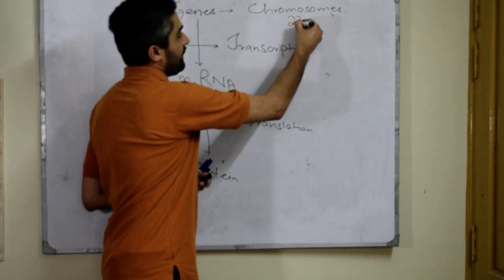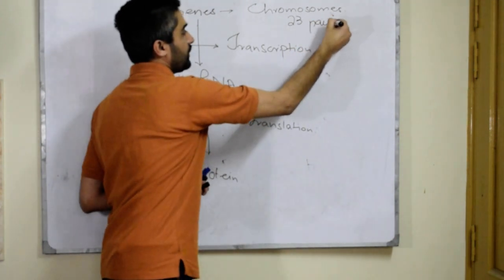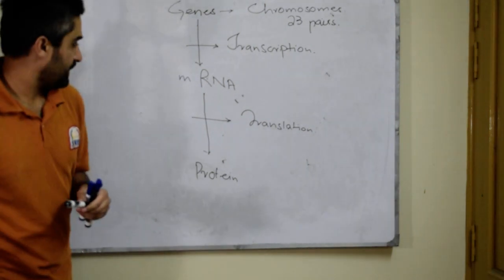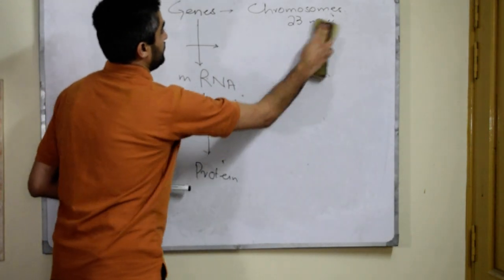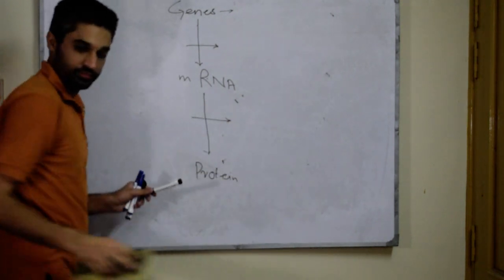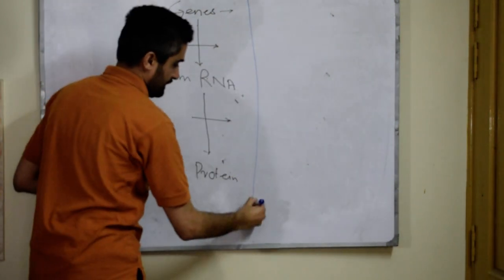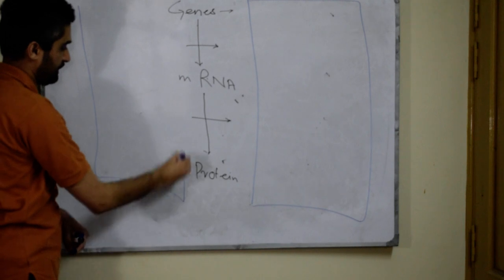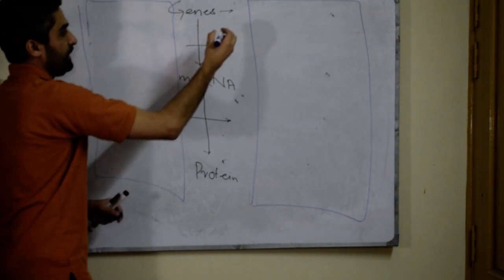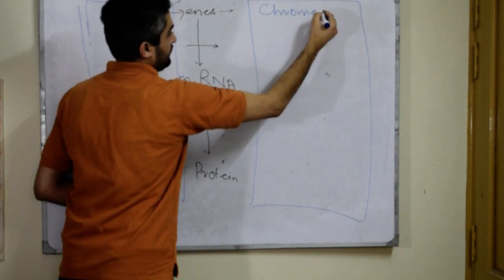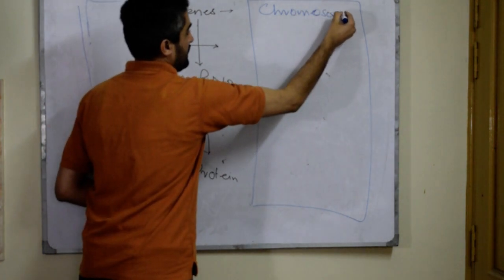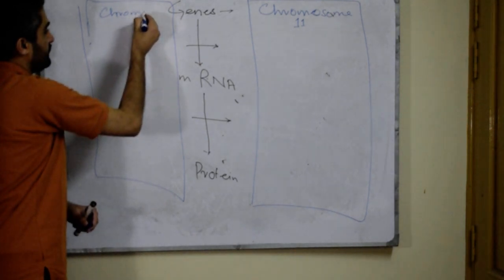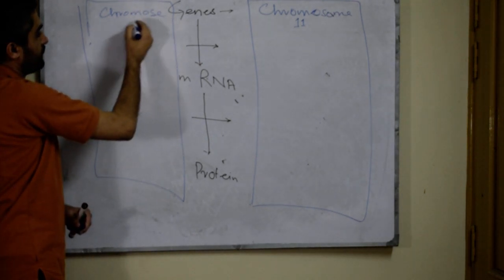We know there are 23 pairs of chromosomes in a human body. For example, let us consider chromosome number 11 and chromosome number 16.